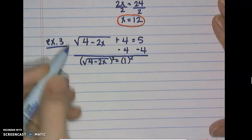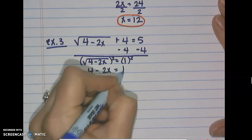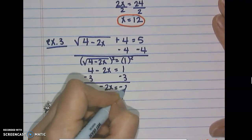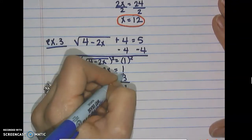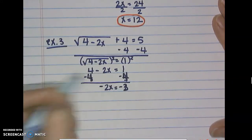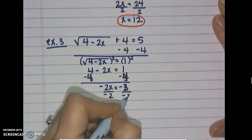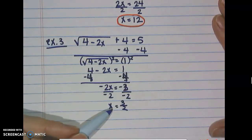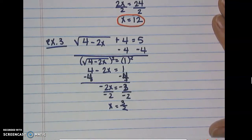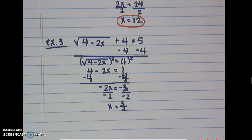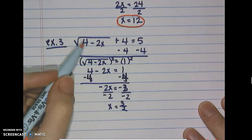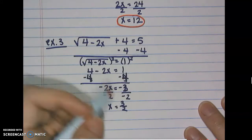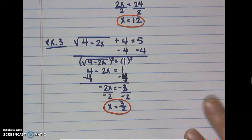Squaring both sides gives us 4 minus 2x equals 1. Subtracting 4 from both sides gives negative 2x equals negative 3. Dividing by negative 2, x equals positive 3/2. Checking: negative 2 times 3/2 is negative 3, and 4 minus 3 is 1, the square root of 1 is 1, and 1 plus 4 gives us 5. Confirmed.